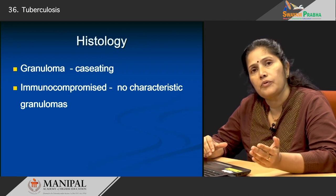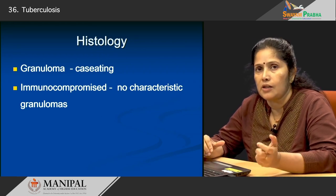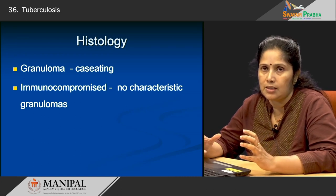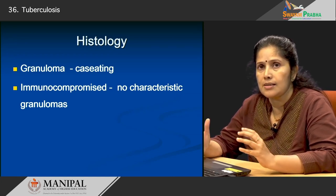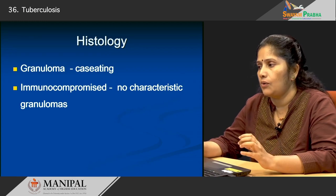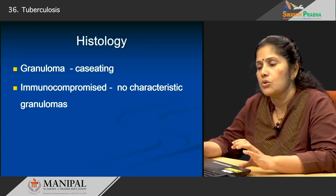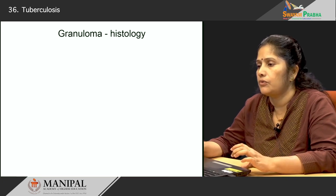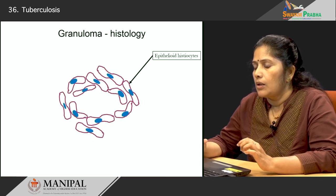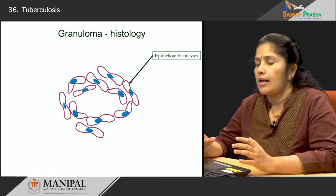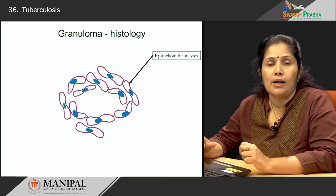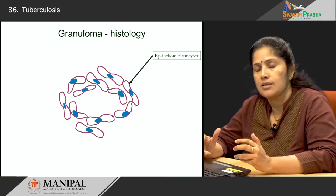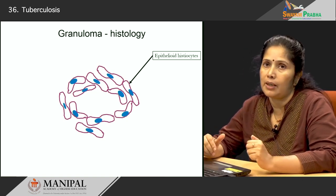Rarely, in some immunocompromised patients such as HIV patients, you do not see a classic caseating granuloma, but some components will still be present. The special cells we see in a granuloma are the epithelioid histiocytes — these are nothing but modified macrophages. Macrophages are modified monocytes. The monocytes present in the blood come into the region where the bacilli is present and get converted into epithelioid histiocytes.